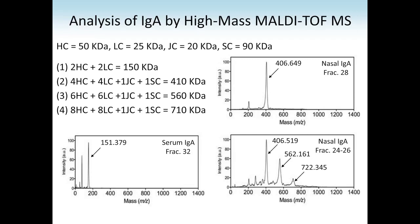As you see here, the first band was a 151 kilodalton peak, corresponding to two heavy chains and two light chains — that is monomeric IgA. Then one J-chain and one secretory component gives 410 kilodaltons, which is the dimeric form of secretory IgA. The next peaks at 562 and 722 kilodaltons correspond to six heavy chains plus light chains, and eight heavy chains plus light chains, respectively — those are the trimeric form and the tetrameric form of IgA.